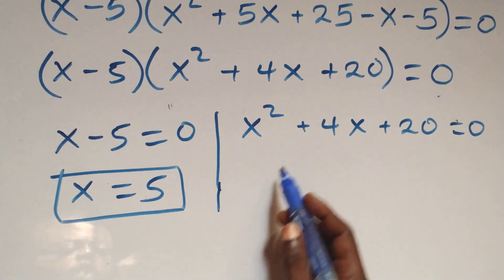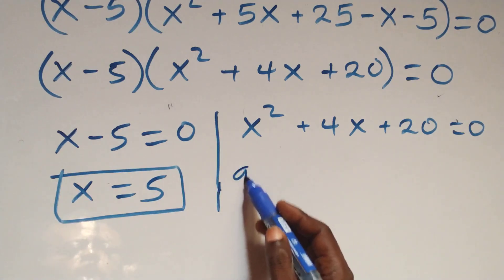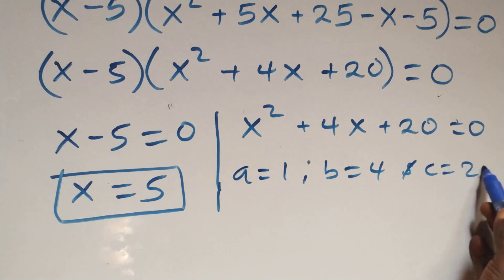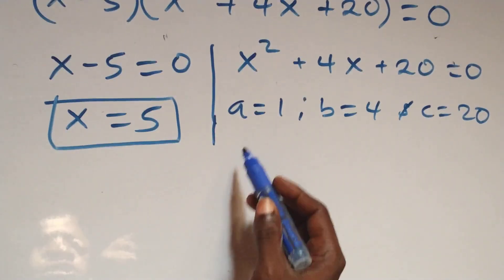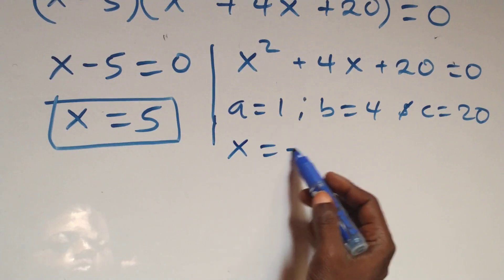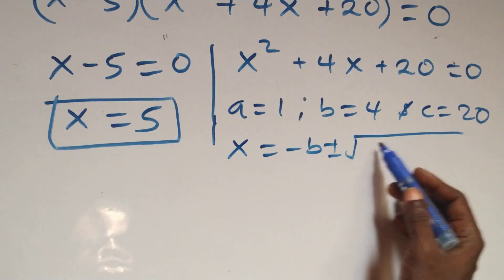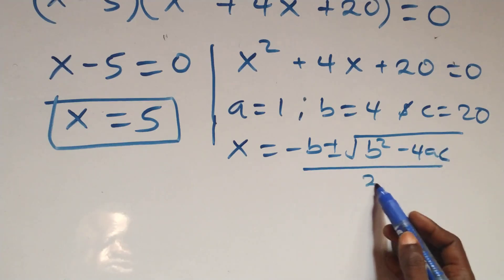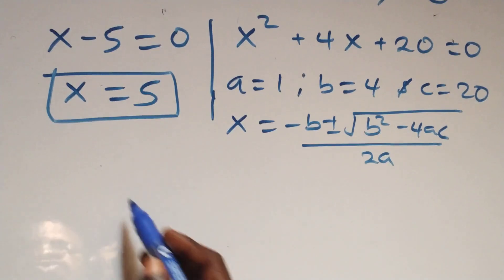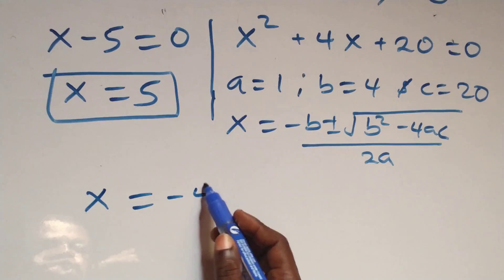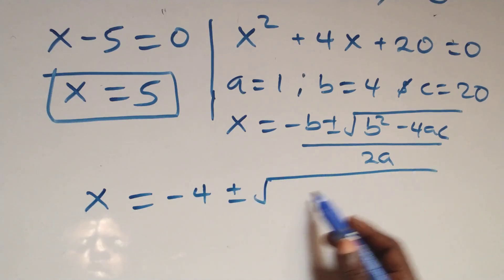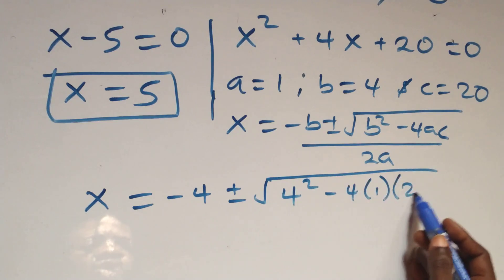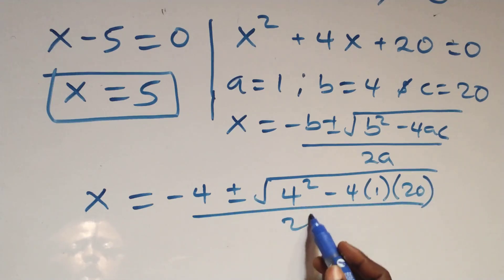On the other side we have a quadratic equation where a equals 1, b equals 4, and c equals 20. Applying the quadratic formula: x equals minus b plus or minus square root of b squared minus 4ac, all over 2a. This becomes x equals minus 4 plus or minus square root of 4 squared minus 4 times 1 times 20, all over 2 times 1.